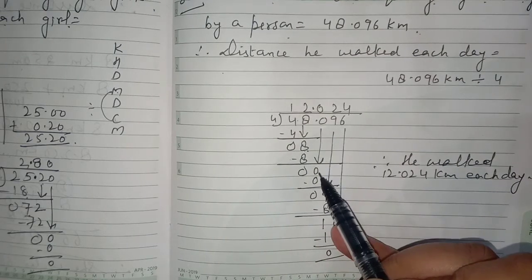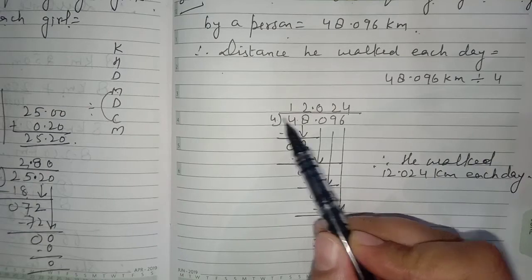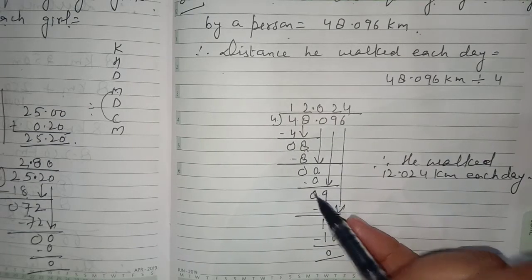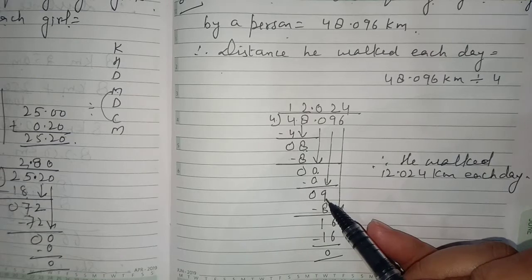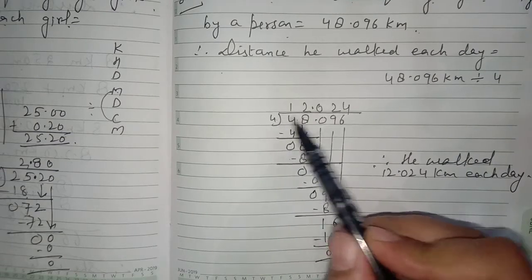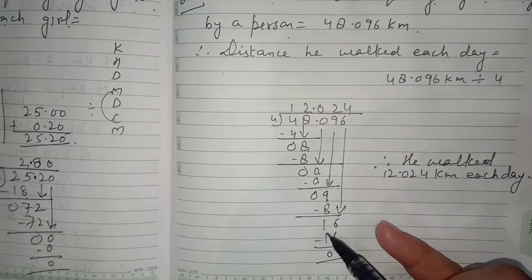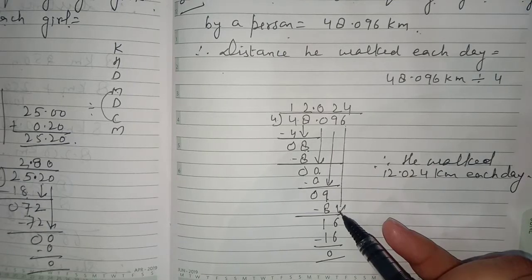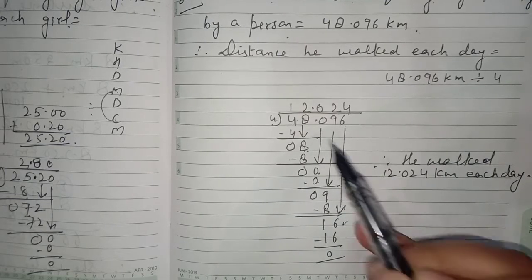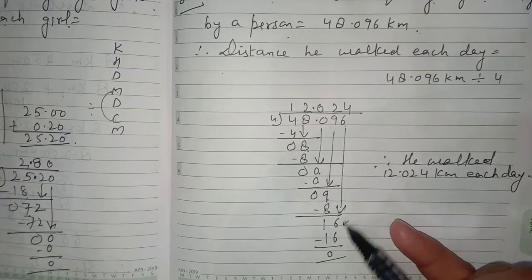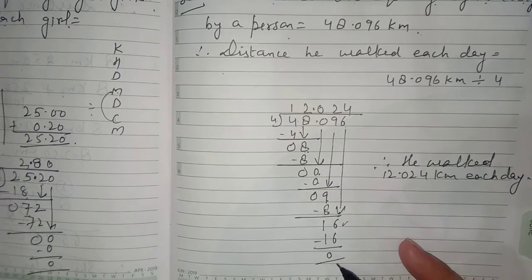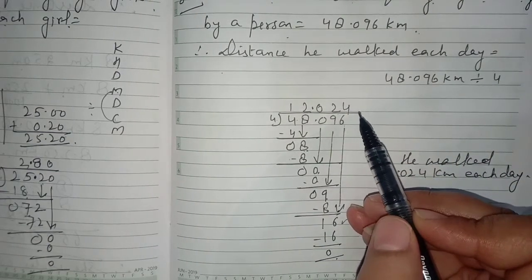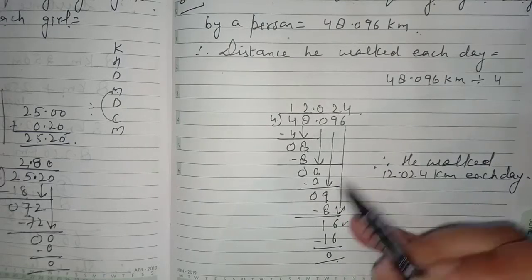Four 2s are 8, 9 − 8 = 1; bring down 6; dividend is 16; four 4s are 16, 16 − 16 = 0. Now put the decimal in the quotient. In the dividend there are three digits after the decimal, so in the quotient also there should be three digits after the decimal.